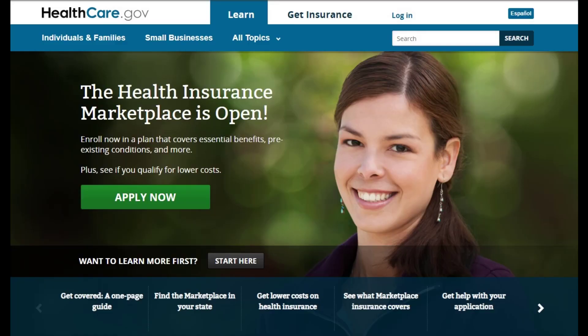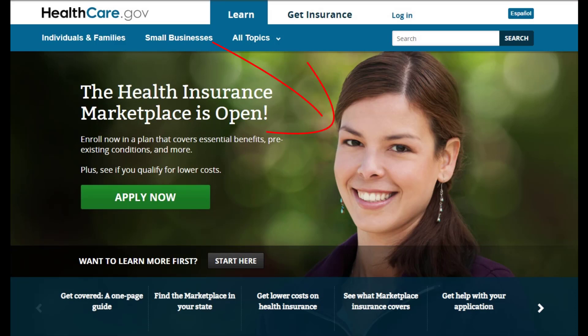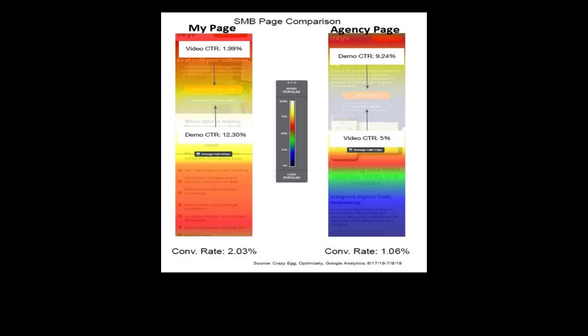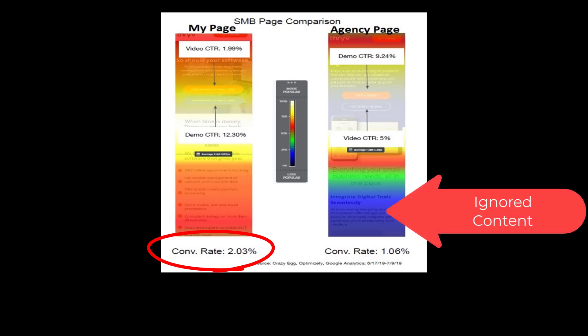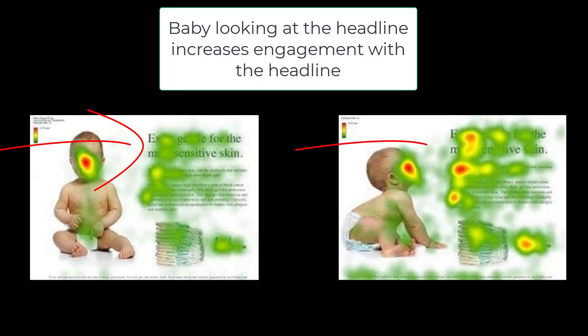Even the images you use will either help you grow your online customer base or repel them. We can easily see this with heat maps and how people look at your marketing material. Common wisdom these days is to have a smiling woman looking at your potential customer — looking back at them — but in testing, this actually pulls eyes away from the marketing message and lowers the conversion rate. However, having that same model look at your headline or key marketing concepts actually increases conversions.